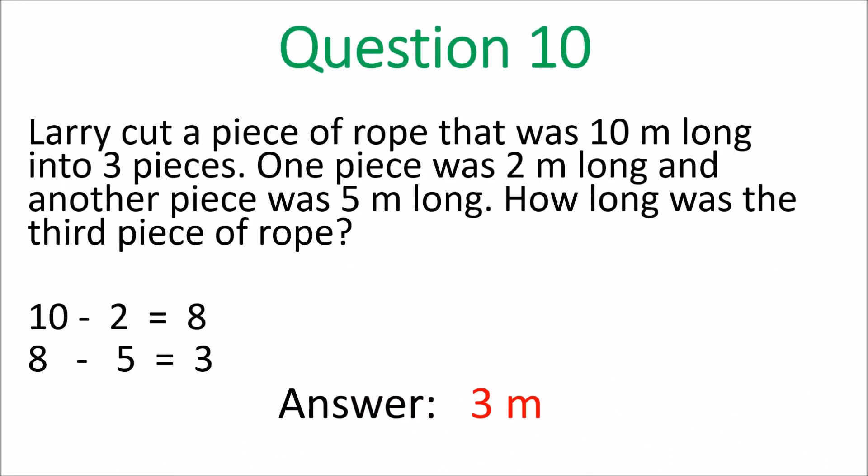And lastly, question 10. Larry cut a piece of rope that was 10 meters long into 3 pieces. So if the first piece was 2 meters long, 10 take away 2 is 8. If the other piece was 5 meters long, 8 take away 5 is 3. So that would leave the last piece would be 3 meters long.